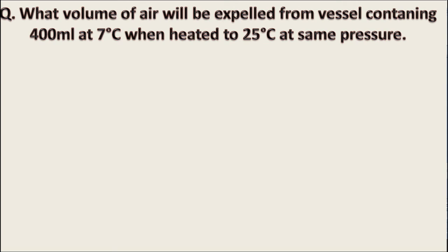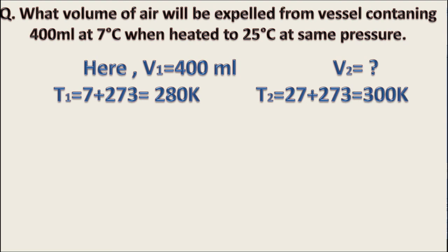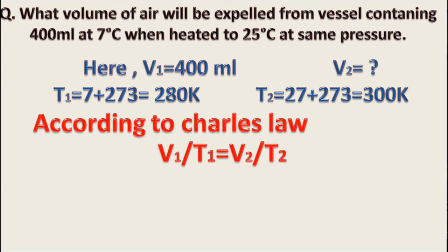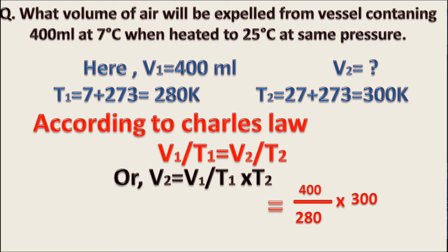The numerical problem related to Charles's law can be solved as: V1 equals 400 ml, T1 equals 7 plus 273 equals 280 Kelvin, T2 equals 27 plus 273 equals 300 Kelvin. From Charles's law, V1 by T1 equals V2 by T2, or V2 equals V1 upon T1 into T2, which equals 400 upon 280 into 300, and V2 equals 428.5 ml.